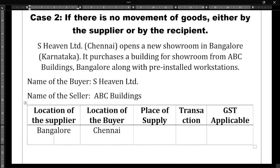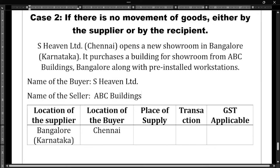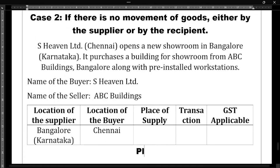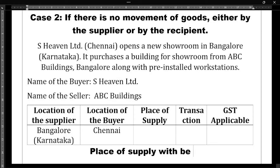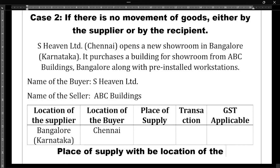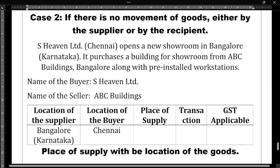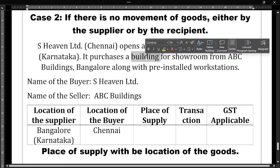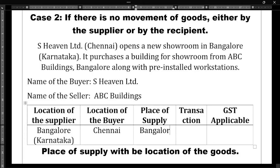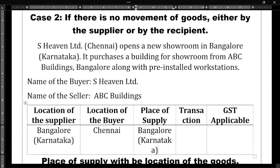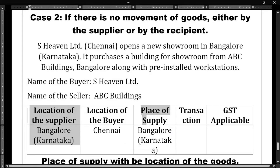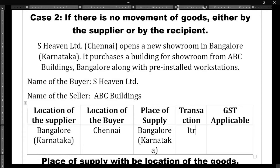When this type of case appears, the place of supply will be the location of the goods — wherever the goods are situated, that location is considered the place of supply. Here, the building is in Bangalore, so the place of supply becomes Bangalore, Karnataka. When we compare the location of the supplier and the place of supply, both are the same, so it is an intrastate supply.